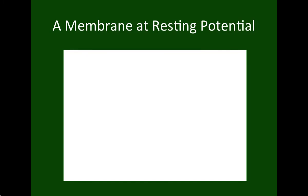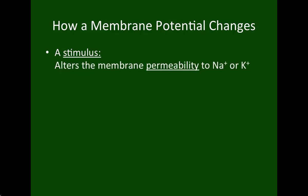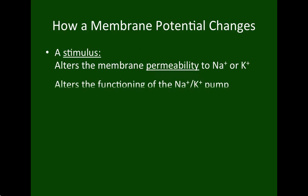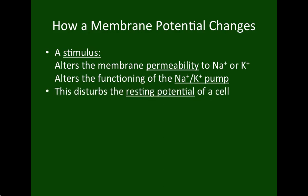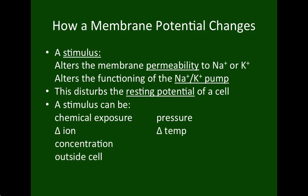Now let's look at how this resting membrane potential changes. What changes it is called a stimulus. A stimulus alters the membrane permeability to sodium or potassium and also shuts down the functioning of the sodium-potassium pump, which disturbs the resting potential. A stimulus can be anything like chemical exposure, pressure, a change in temperature, or a change in ion concentration outside the cell.